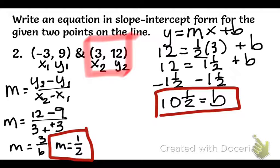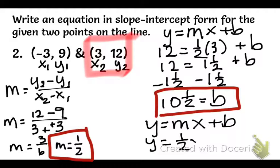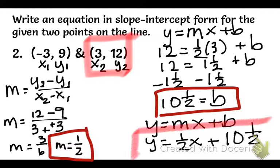And again, ladies and gentlemen, I still have not finished the problem because I have to write an equation in slope-intercept form. So now I need to plug those values into y equals mx plus b. So I'm going to plug in my slope, my 1 half in for m, and I'm going to plug in 10 and a half for b. So here's my final answer: y equals 1 half x plus 10 and a half.